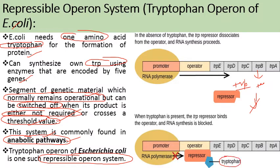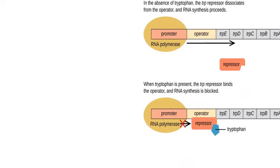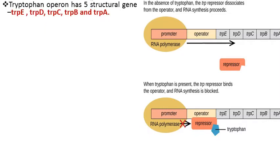It is repressible because the presence of tryptophan in the cell causes it to combine with the repressor coded by the regulatory gene (I gene), which activates the repressor. The activated repressor binds with the operator and switches off the operon system, so the structural genes cannot be transcribed — transcription gets halted. There are five structural genes in the tryptophan operon: trpE, trpD, trpC, trpB, and trpA, as seen in the image. These are transcribed to form different enzymes involved in tryptophan synthesis.